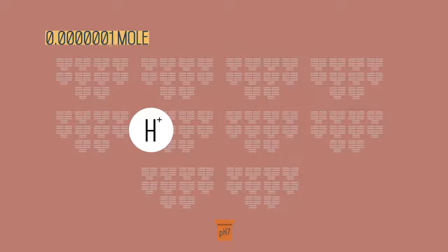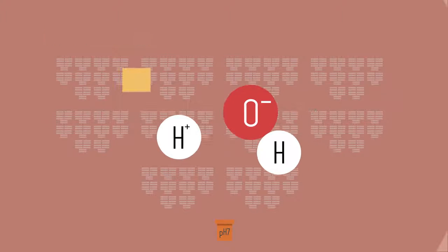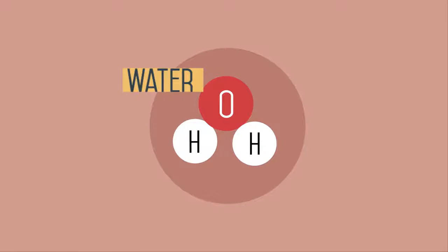So when you reach pH 7 there are only 10 to the power negative 7 or 0.00001 mole of hydrogen ions per litre. Here there are also an equal number of hydroxyl ions and we have arrived at pure neutral water.